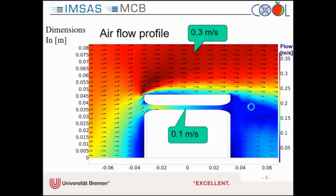Looking at the simulation results: this is a cross-section of a three-dimensional simulation. We had an inlet velocity of 0.3 meters per second, but as you can see in the channel, we achieved only 0.1 meters per second — that means one-third less. And if we reduce the airspeed even lower, the relation between those two values gets even worse.